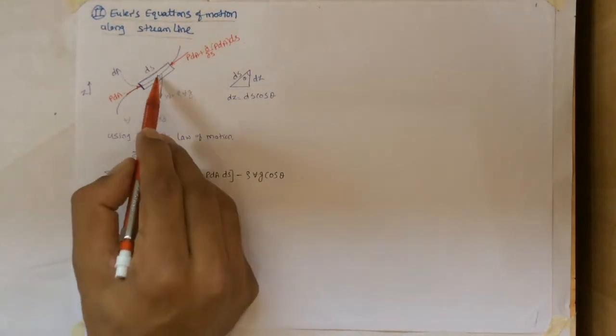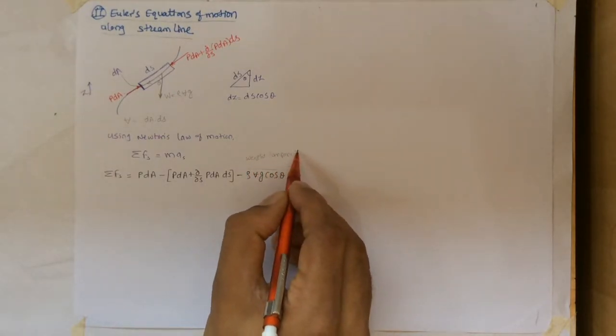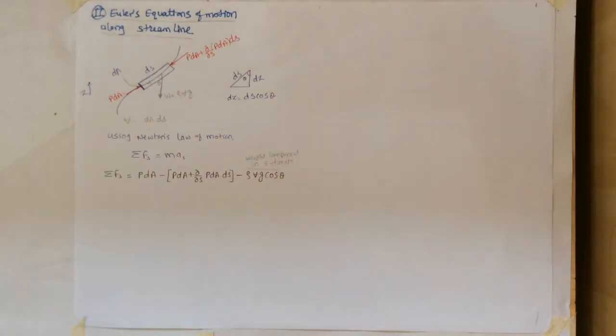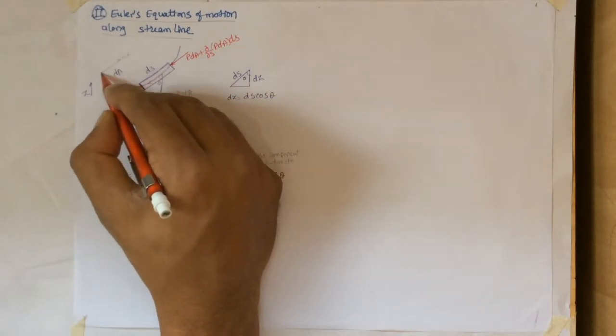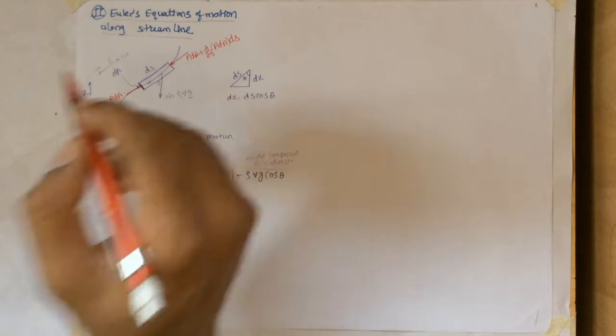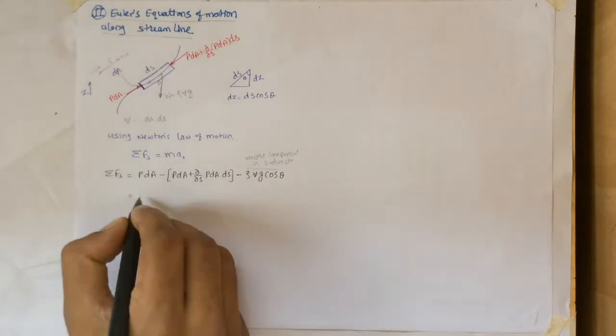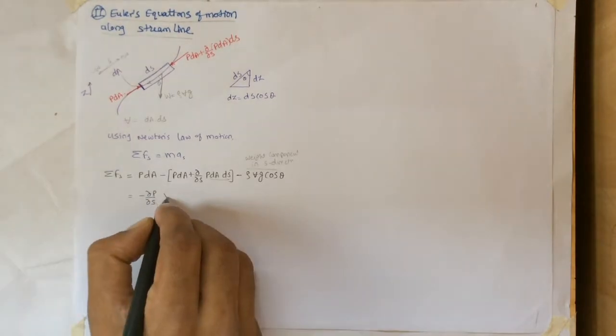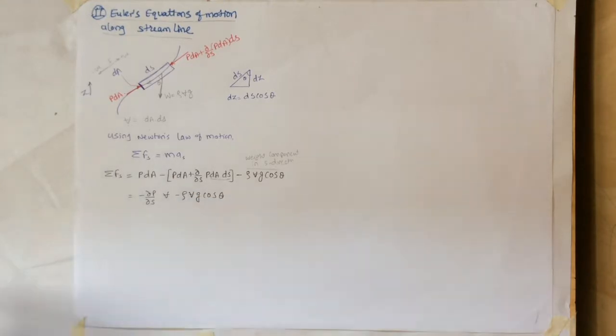So in these two things we need to understand: weight component of element in streamline direction as negative. The direction in upside of the streamline is taken as positive and downside of the streamline is taken as negative. After simplification we get minus dp/ds times volume minus rho volume g times cos theta.